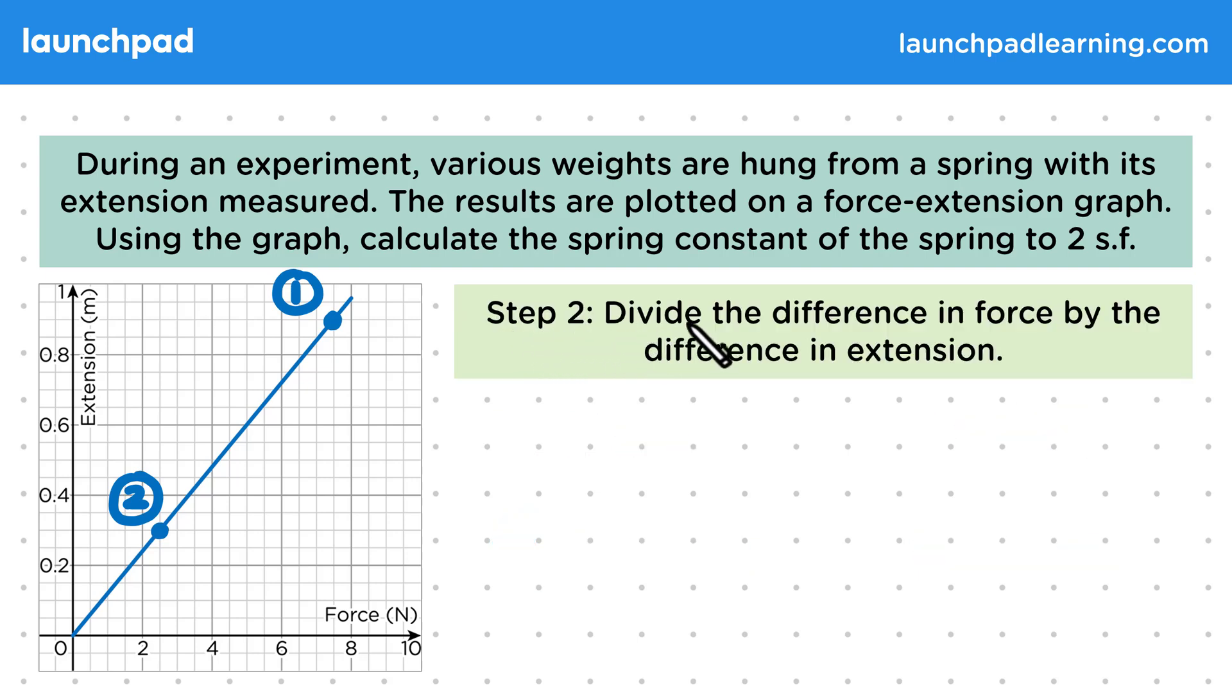Then in step two, we divide the difference in force by the difference in extension, and this is because the spring constant k is equal to f divided by e. So it becomes 7.5 minus 2.5 divided by 0.9 minus 0.3, and that gives us 8.333 recurring.